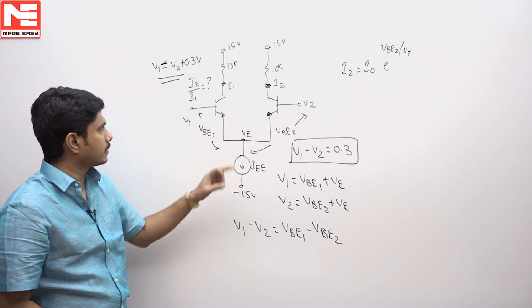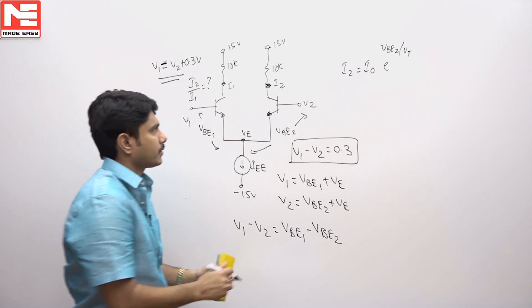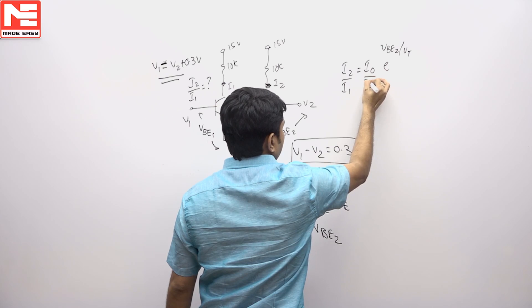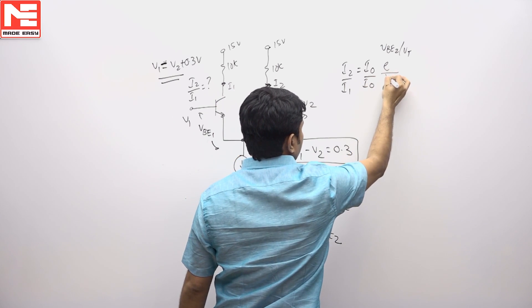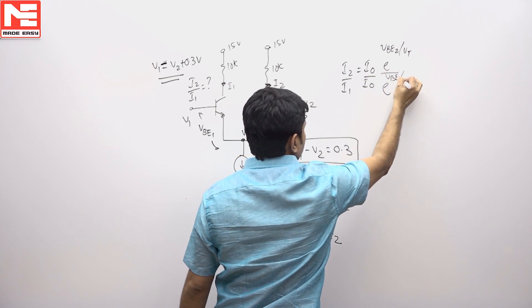Diode current equation, this is the first diode current equation, therefore I2 by I1 is equal to, I0 will be same, E power VBE1 divided by VT.